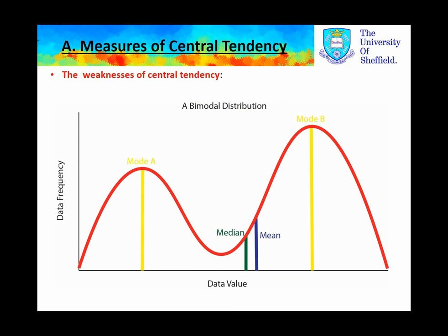However, there are several weaknesses of central tendency. Take this graph, for instance. Here we show two different modes, mode A and mode B. We have the Median, which is the 50th percentile of the data set, and the Mean, which are in broadly similar positions but not exactly the same position. So which of these is most appropriate in this instance?